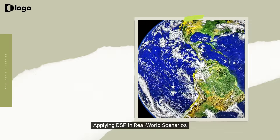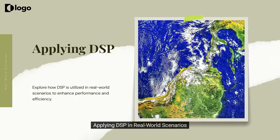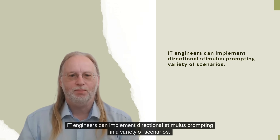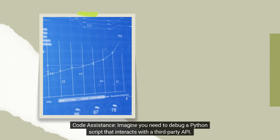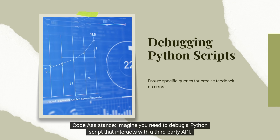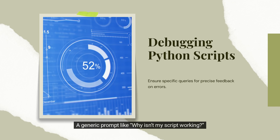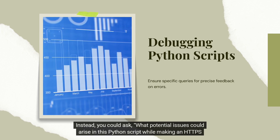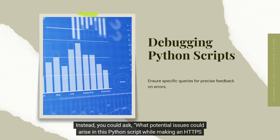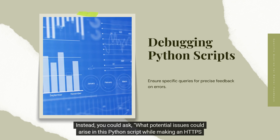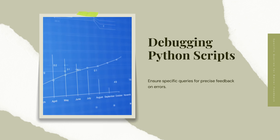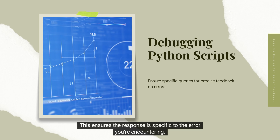IT engineers can implement Directional Stimulus Prompting in a variety of scenarios. For code assistance, imagine you need to debug a Python script that interacts with a third-party API. A generic prompt like 'Why isn't my script working?' may lead to overly broad feedback. Instead, you could ask: 'What potential issues could arise in this Python script while making an HTTPS request with a missing Content-Type header?' This ensures the response is specific to the error you're encountering.